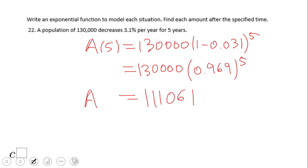So the population after five years, if the population decreases by 3.1% per year, is 111,061. If you enjoyed this video, don't forget to click the like button, and come back on C-square for more math video clips. Thank you.